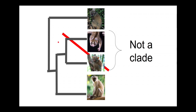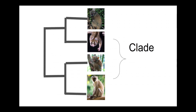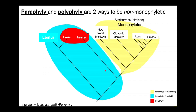However, improved evidence — particularly genetic evidence — indicates that tarsiers and lorises, despite both living in the same part of the world and having large eyes and being nocturnal, are not a clade and are not each other's closest living relatives. We should actually link lorises and lemurs together as sister groups, and tarsiers are actually more closely related to monkeys than they are to lorises or lemurs.